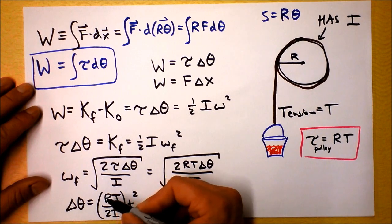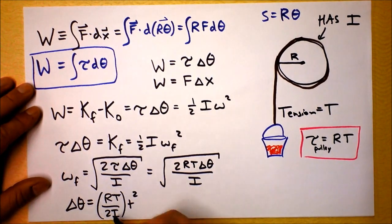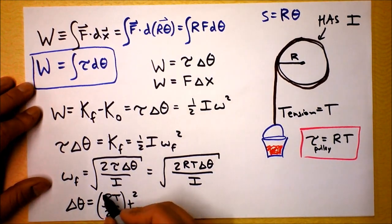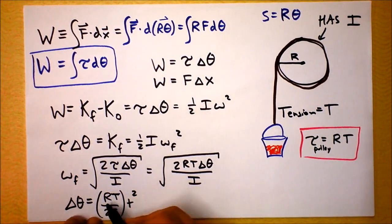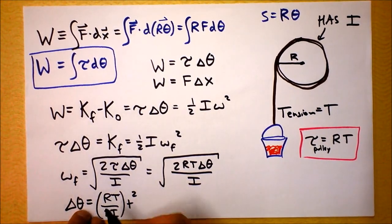This R is just a pure R, but I depends on R. So maybe these Rs are going to kind of cancel out for a pulley. So it is probably independent of the radius of a pulley.